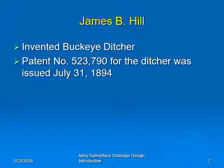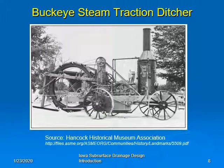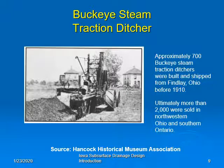James Hill was a prolific inventor and in 1907 he received a patent for the traction apron that is known today as the Caterpillar Tread. This machine, number 88, was restored by the Hancock County, Ohio Museum Association and is an example of the first successful machine ditcher. It has been designated a historic landmark by the American Society of Mechanical Engineers. Approximately 700 Buckeye steam traction ditchers were built and shipped from Findlay, Ohio before 1910, and ultimately more than 2,000 were sold in northwestern Ohio and southern Ontario.